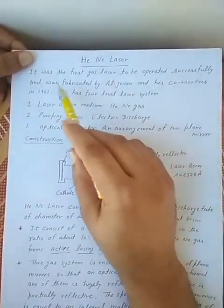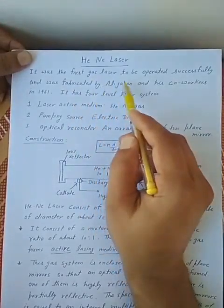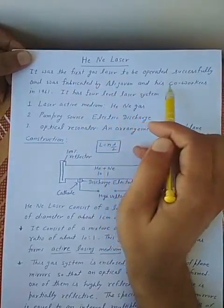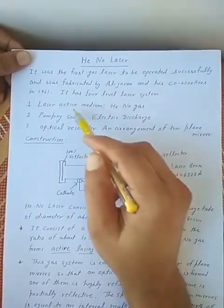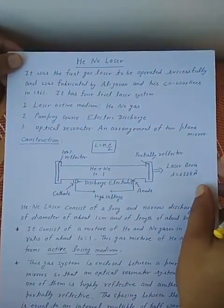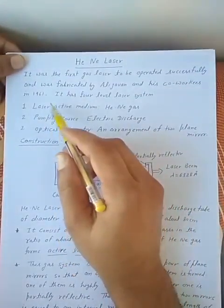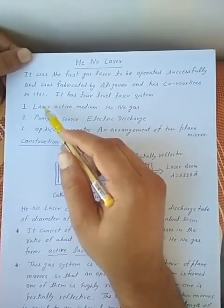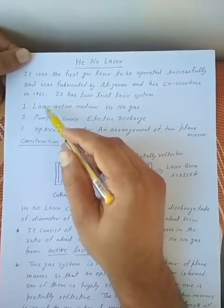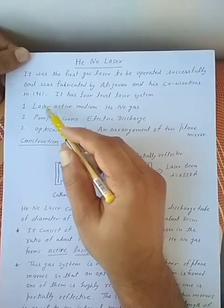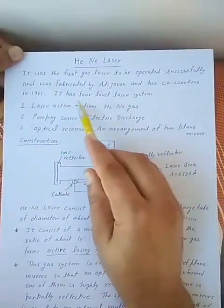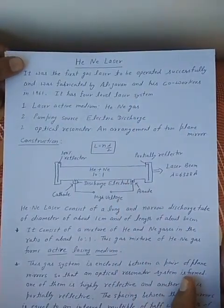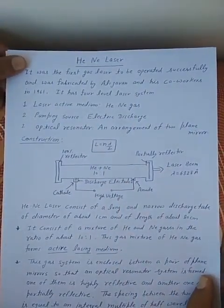The Helium Neon Laser was the first gas laser to be operated successfully and was fabricated by Ali Javan and his co-workers in 1961. It is a low power laser used in laboratory purposes for performing experiments based on laser. It has a four-level laser system, so there are four levels which are utilized to produce laser action.